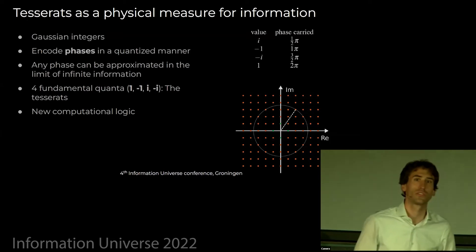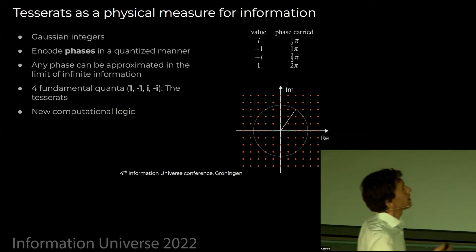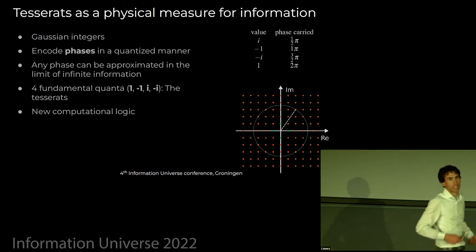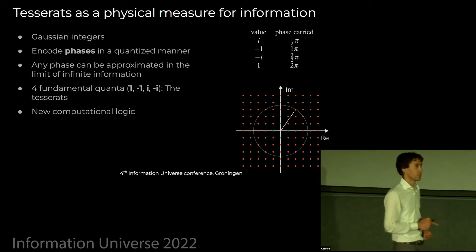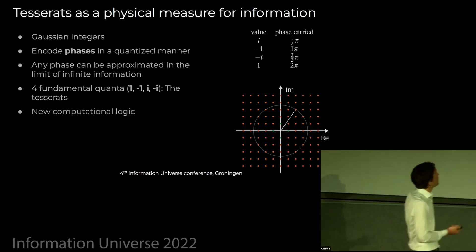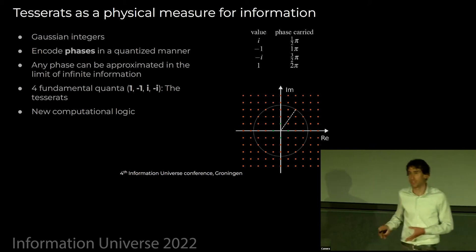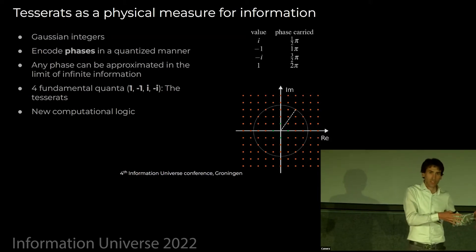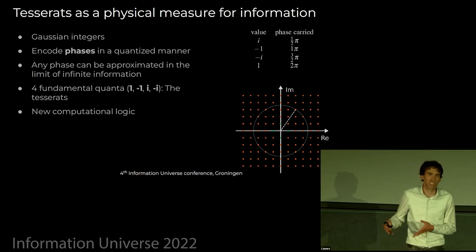They have now four quanta which are i, minus i, one, minus one with the associated phases. Once you think about that, you have not only four quanta, but you also see that you can only approximate a generic phase with infinite precision in the limit of infinite amount of information. Many might argue, okay, but now you have four units; I could have taken two bits instead of one and nothing would have changed. But you have to be careful because by introducing this type of units for encoding information, we are really changing the computational logic behind this encoding. Tesserats are quanta of complex numbers, and they are different than bits as complex numbers are different than real numbers.